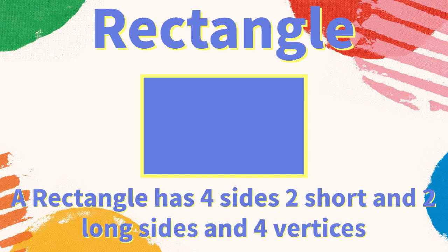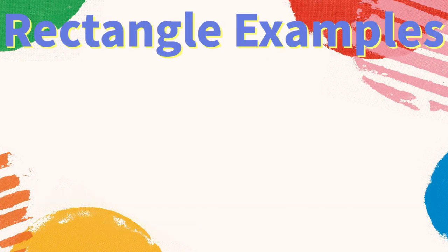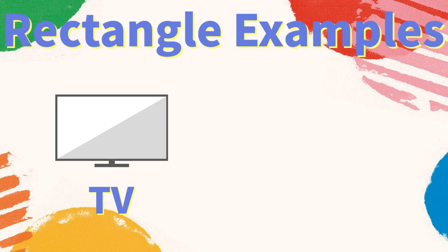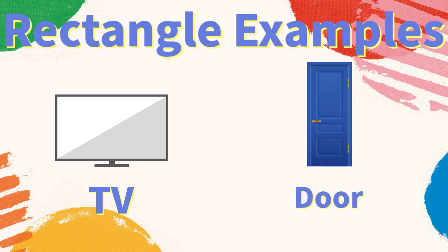Rectangle: a rectangle has four sides — two short and two long sides — and four vertices. What are some examples of rectangles? A TV is a rectangle, a door is also a rectangle. What other examples can you think of?